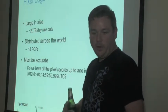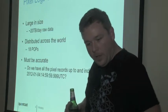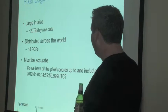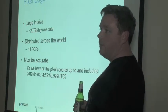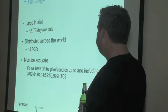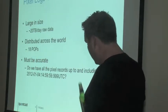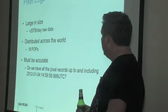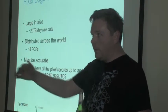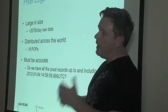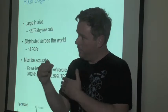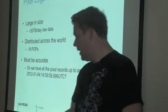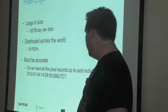Our pixel logs tend to be very large — about 20 terabytes a day of raw, uncompressed data, distributed across the world. We currently have 18 different points of presence. And we have to know that when we're looking at this data, it's really accurate. If we say we need all the pixel records that came in before this exact millisecond timestamp, we have to be able to do that correctly.